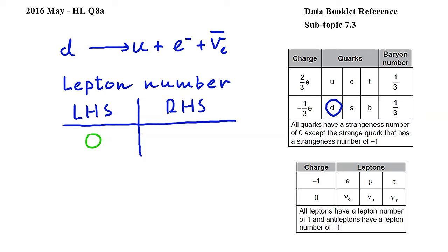Let's now examine the right-hand side. Here we have an up quark, and since it is a quark, its lepton number is zero. Then we have an electron, which we can find in the second table from subtopic 7.3, where we see that the electron is a lepton, and we also see that leptons have a lepton number of one. So the lepton number of the electron is one.